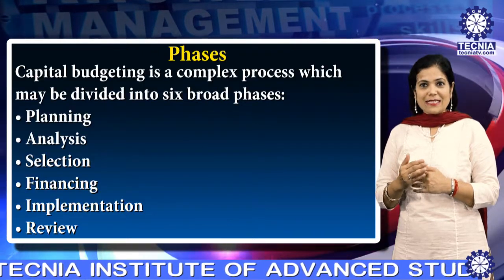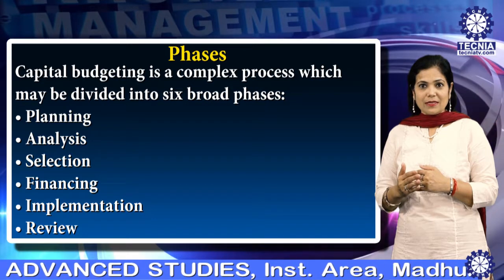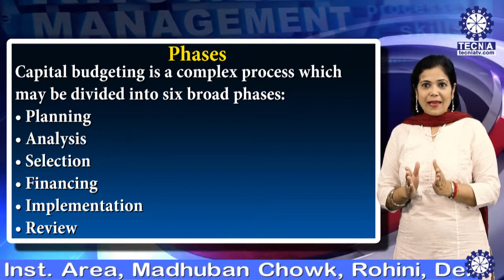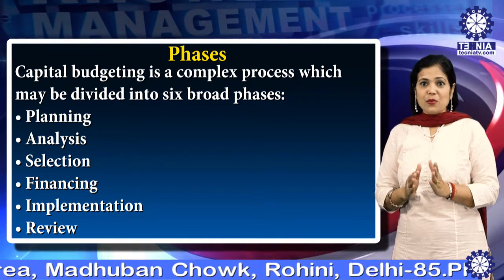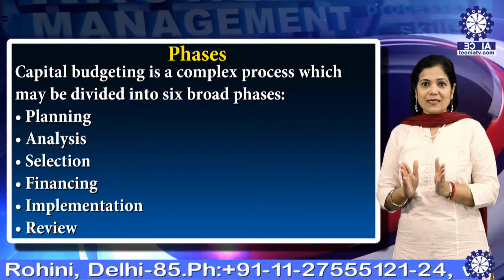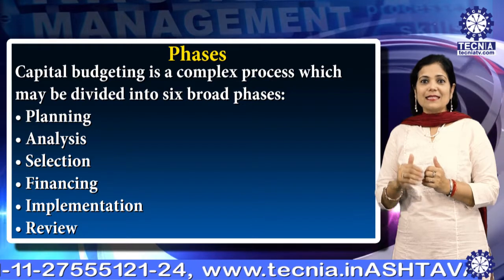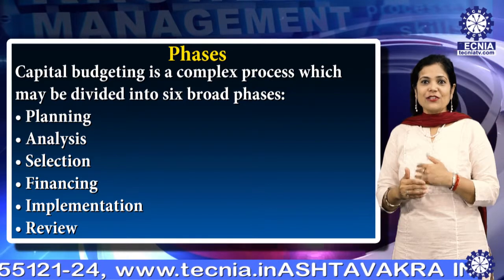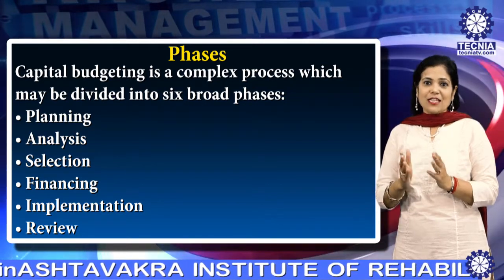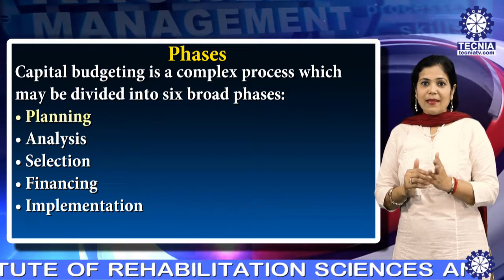Now we are discussing the phases of capital investment. Capital budgeting is a complex process which may be divided into six broad phases: first is planning, then analysis, then selection, then financing, then implementation, and finally review.